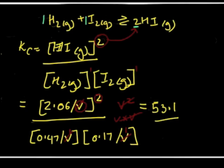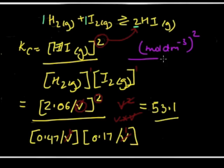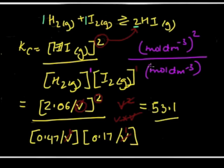Looking at the units: we have mol dm⁻³ squared in the numerator because of the power of 2, and mol dm⁻³ times mol dm⁻³ in the denominator, which also gives a power of 2. So the units cancel out, and Kc has no units in this case.